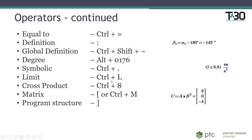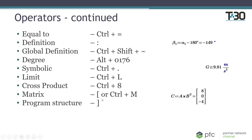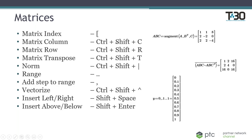For matrices, there are several shortcuts. Hitting the left bracket after a variable inserts a matrix index. Hitting the left bracket without a preceding variable — or using Ctrl+M — starts creating a new matrix. You can also isolate columns and rows, transpose a matrix with Ctrl+Shift+T, compute a norm, create a range vector, or vectorize a matrix.